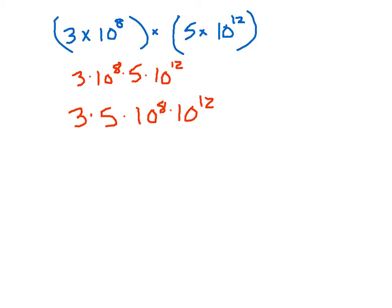Now let's multiply. 3 × 5 gives us 15. And 10^8 × 10^12 — using the exponent rule for multiplying like bases — you add the exponents: 8 + 12 = 20, giving 10^20. So we get 15 × 10^20. However, this is not correctly written in scientific notation, because 15 is not between 1 and 10.